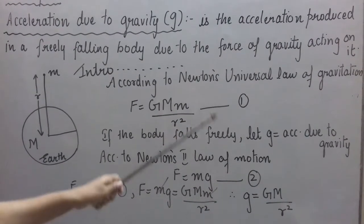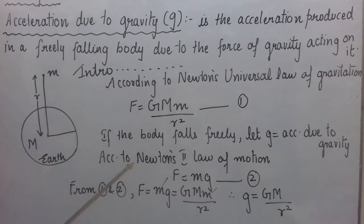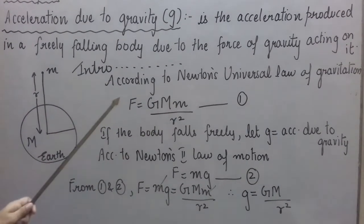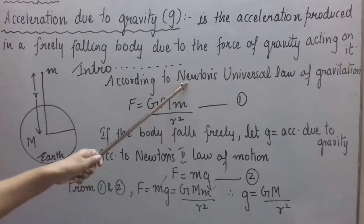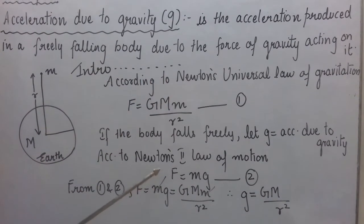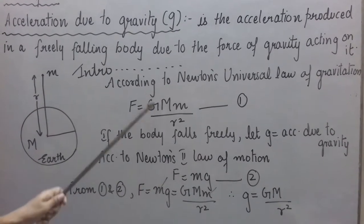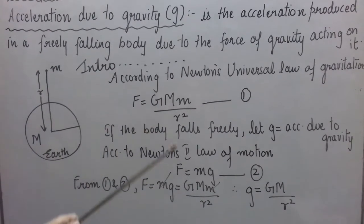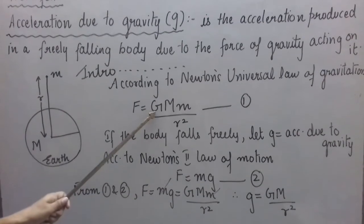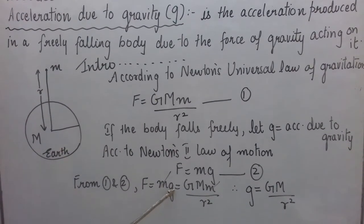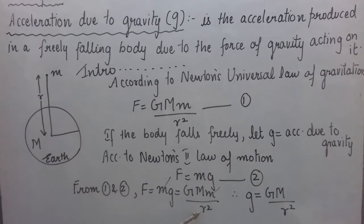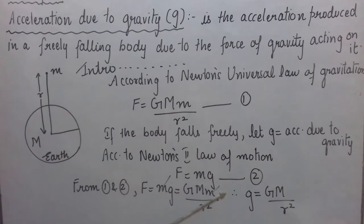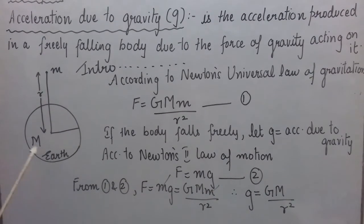Both equations 1 and 2 represent the force of gravity acting on the body of mass small m — equation 1 using Newton's universal law of gravitation and equation 2 using Newton's second law of motion. Since both left-hand sides are equal, we equate the right-hand sides: m times g equals G times M times m divided by r squared. Small m cancels on both sides, giving us small g equals G times M divided by r squared. This is the final expression for acceleration due to gravity.